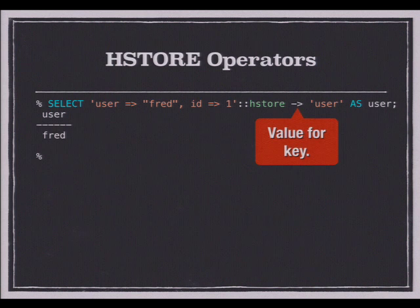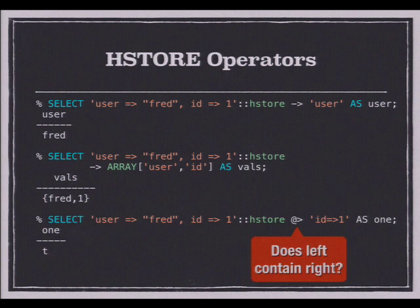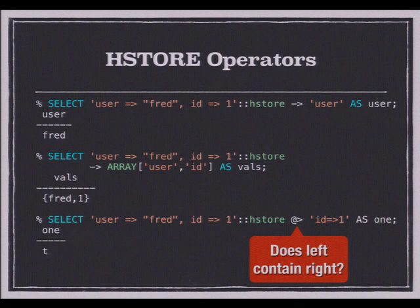There are a number of operators. If you want to get the value of a single key, you use the arrow operator — I'm getting the 'user' key and getting back 'Fred'. You can also pass an array of values — I want 'user' and 'id', so we get back Fred and id1 as an array. A really cool operator is the containment operator — does this HStore value contain this HStore value? It's not just checking if the key is there, but whether the key with this specific value is there.